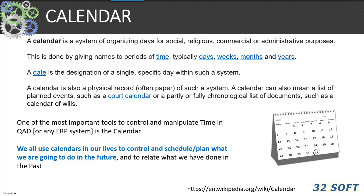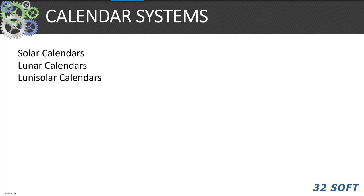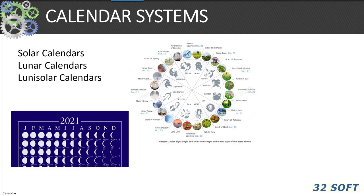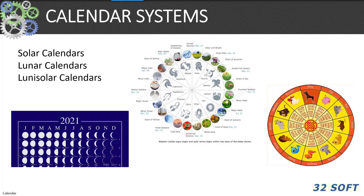There is a long history of mankind using various constructions to consider time and date. A calendar is simply a system of organizing days for social, religious, commercial, or business purposes, by giving names to time periods — typically days, weeks, months, years, etc. A date is a designation of a specific day within such a system. There are basically three types of calendars: solar calendars, lunar calendars based on the moon, and a combination called lunisolar calendars.